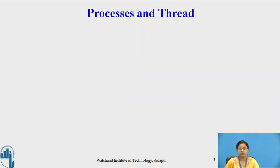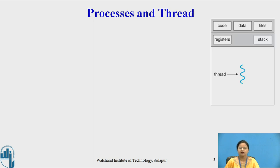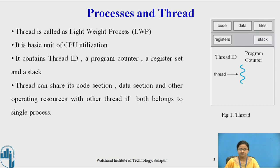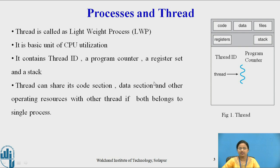Let us see what is a process and a thread. A thread is also called a light-weight process. It is a basic unit of CPU utilization. It contains a thread ID and program counter. It also contains a register set and stack. A thread can share its code, data, and file section with another thread if both belong to a single process.